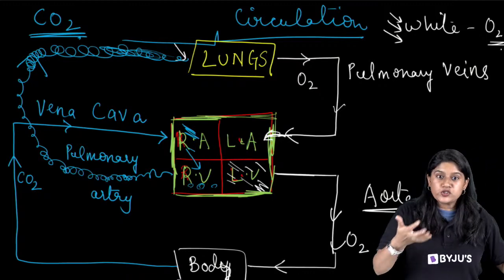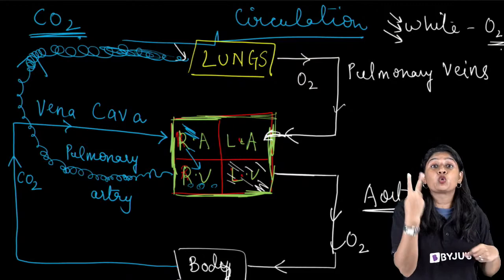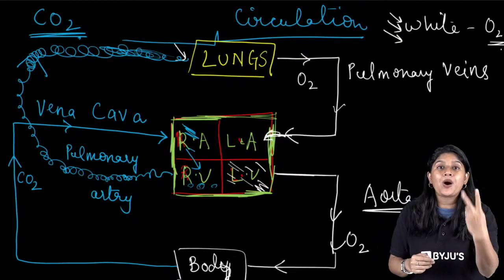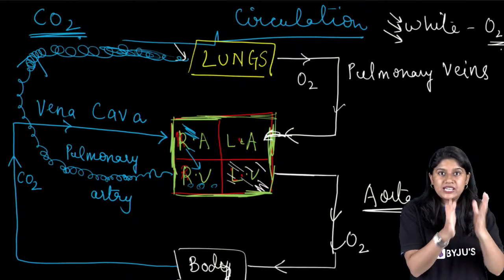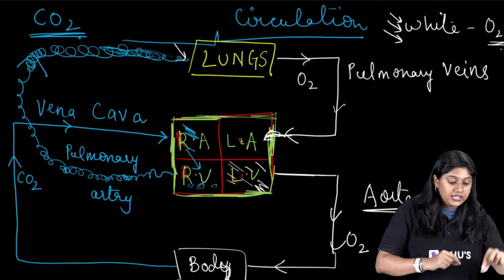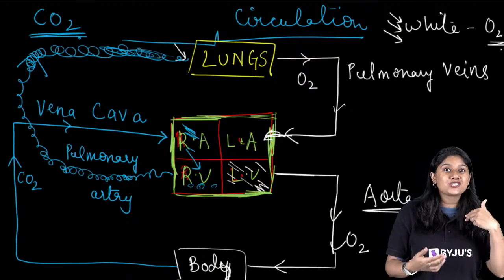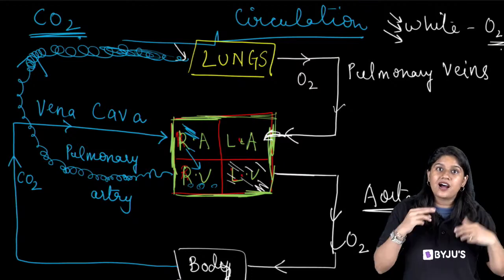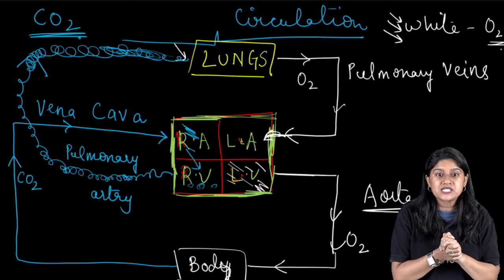Our blood is traveling twice through the heart — once as oxygenated blood and once as deoxygenated blood. The blood goes inside our heart twice. That is why we call it double circulation.